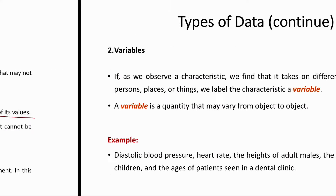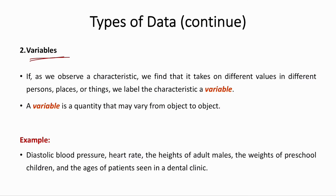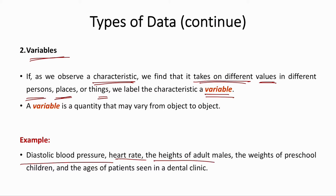A variable is a characteristic that takes on different values in different persons, places, or things. Examples include a person's blood pressure, heart rate, height, weight, and age — all of which change from one individual to another. A variable is always a quantity that varies from object to object.